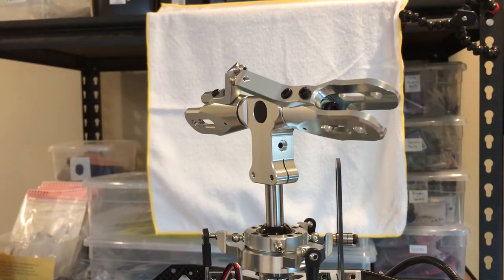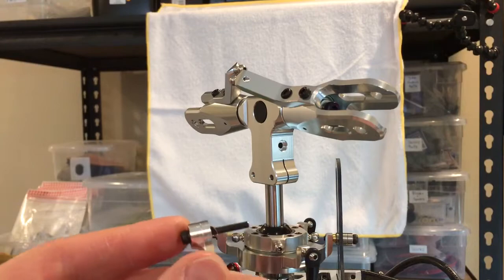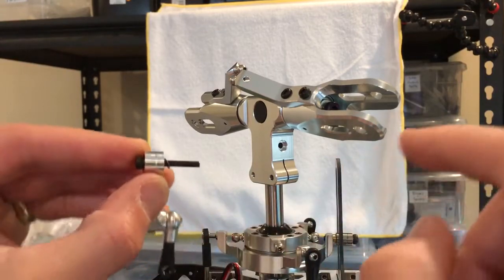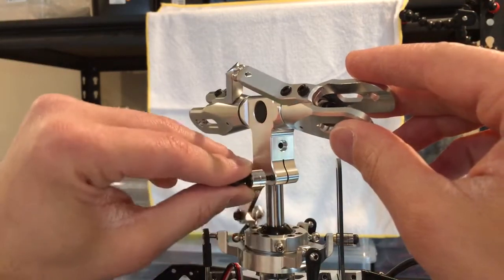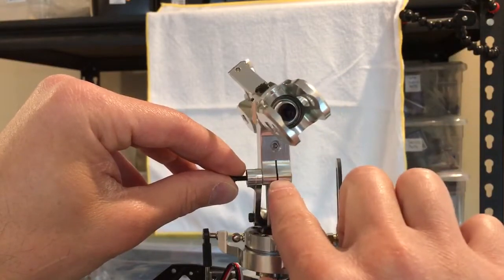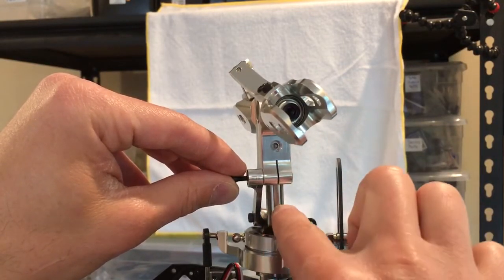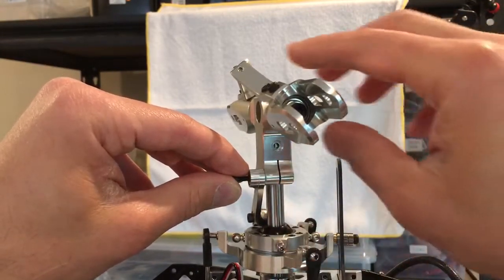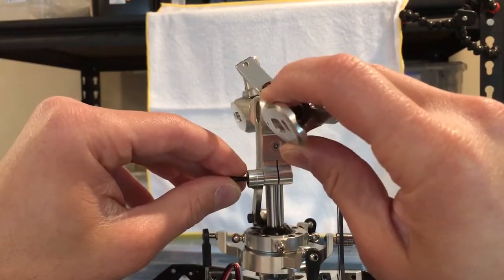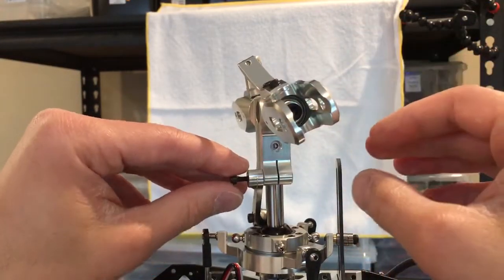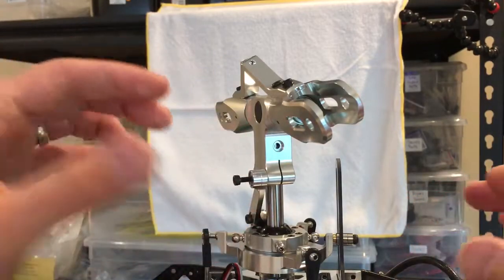Well, what the manual tells you is to tighten these washout arms so that the head clamps onto the main shaft, and that should eliminate the up and down play. In reality, I haven't found that to work 100%.